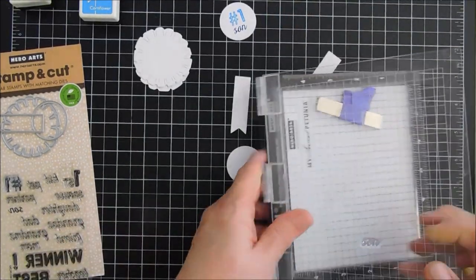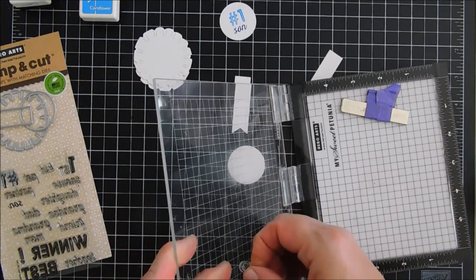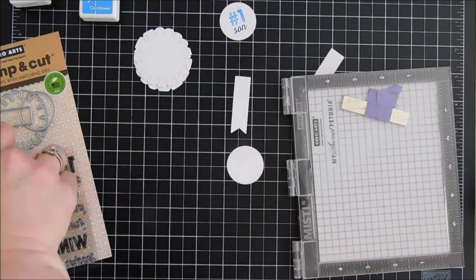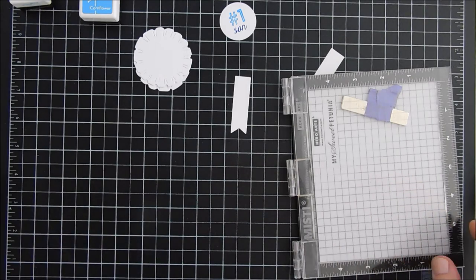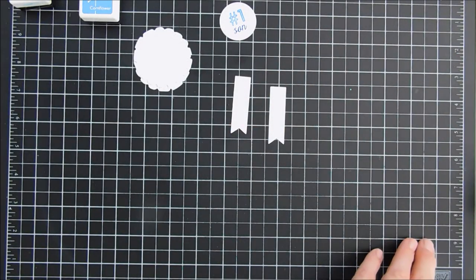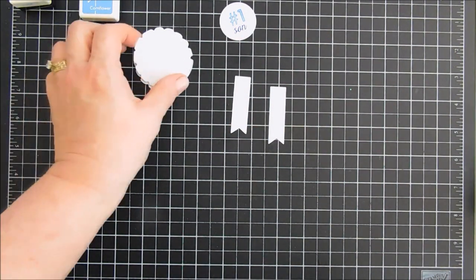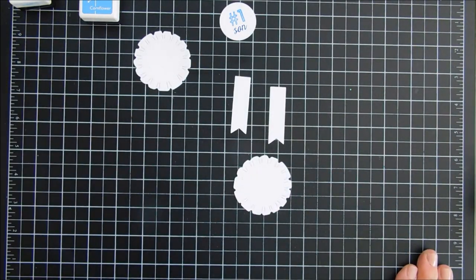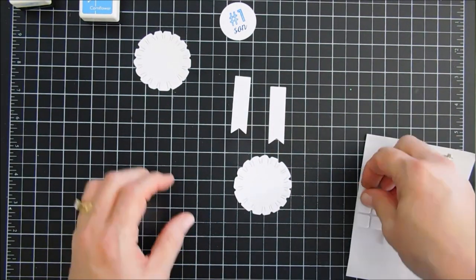That is all the stamping we're going to do. We're going to keep our banner white. Now you could die cut it out any color you like. You know, traditional blue would be pretty, but I'm going to have a pretty full background with color, so I wanted to keep this white so it stood out.